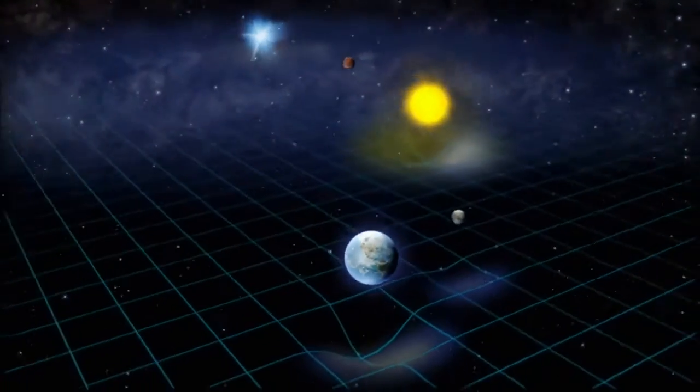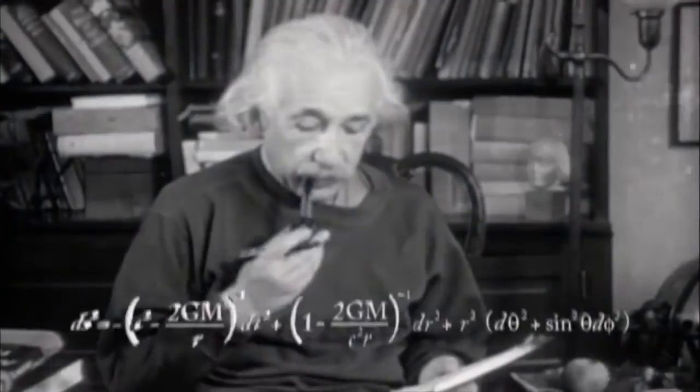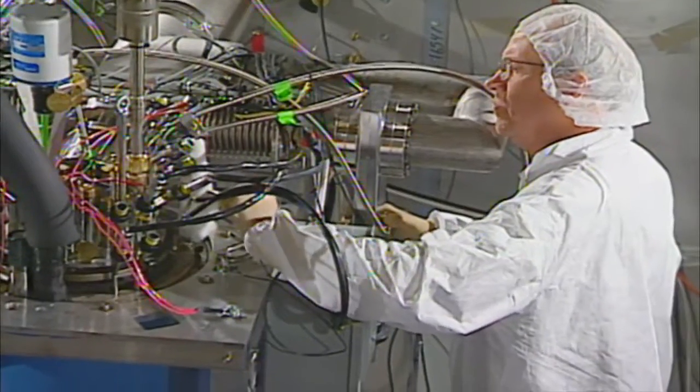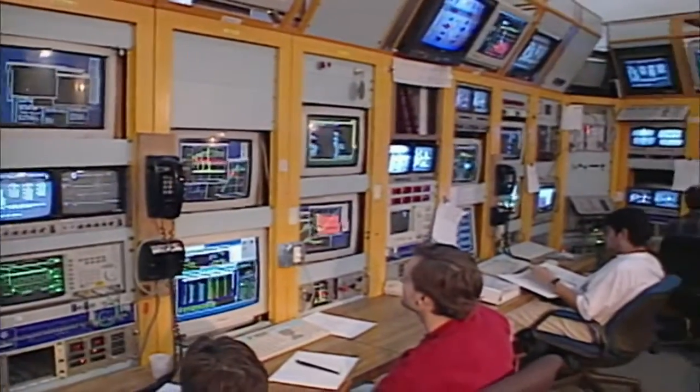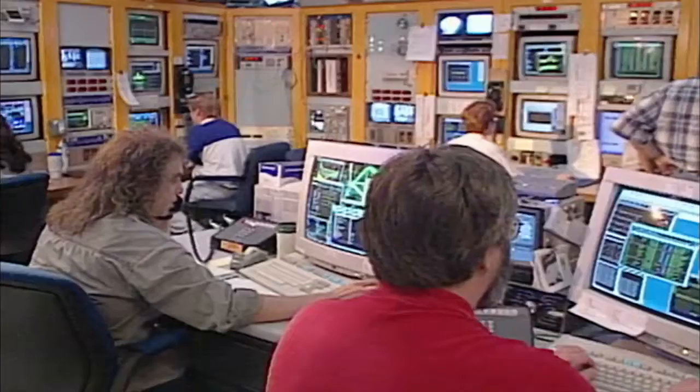But everything inside it remains bound by Albert Einstein and his theory of relativity. Albert Einstein is the cop on the block. You cannot break the light barrier. We physicists can accelerate particles to 99.9999% the speed of light, but we have never, ever broken the speed limit.